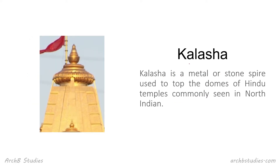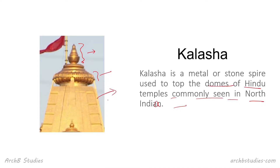Next is Kalasha. Kalasha is a metal or stone spire used to top the domes of Hindu temples, commonly seen in North India only. As you can see, this is the Kalasha, below it is the Amalaka, and beneath that is the Shikhara or Vimana.